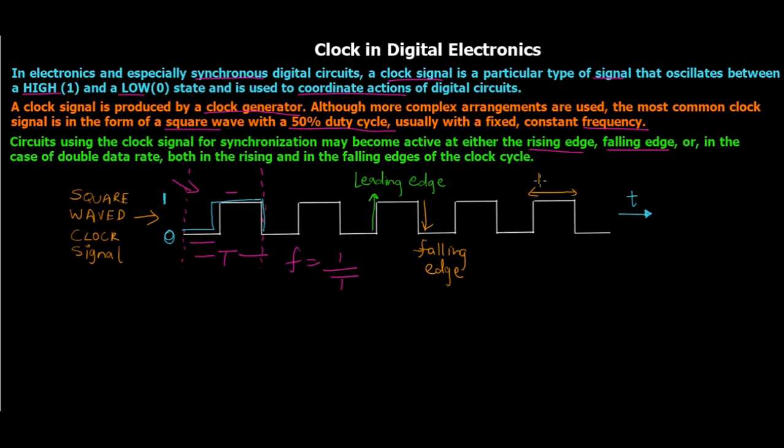And when it is high for a certain amount of time, it is known to be at level 1 or level high. Similarly, when it is at level 0, it is known as level 0 or low level. So these are certain keywords that you need to remember.